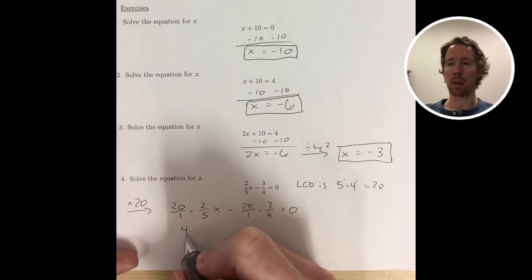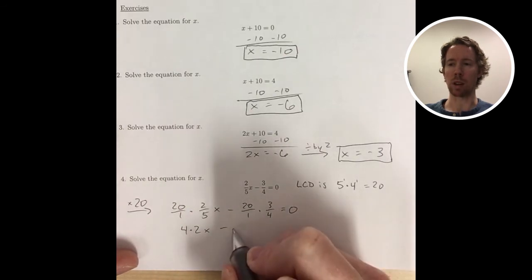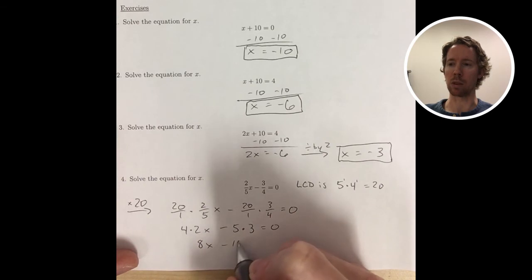Then 20 divided by 5 I know is 4. So that first term just turns into 4 times 2x. And 20 divided by 4 is 5. So that's why I get the 5 times 3.